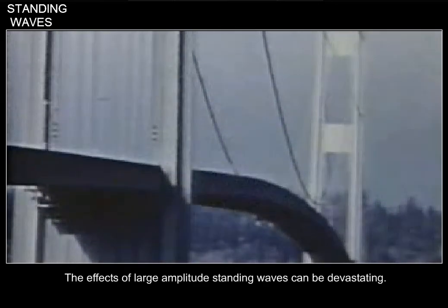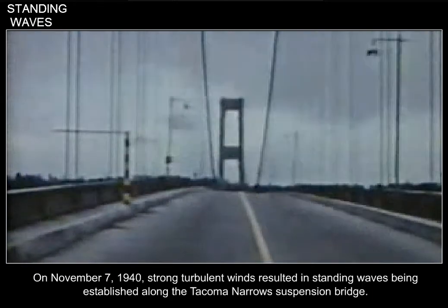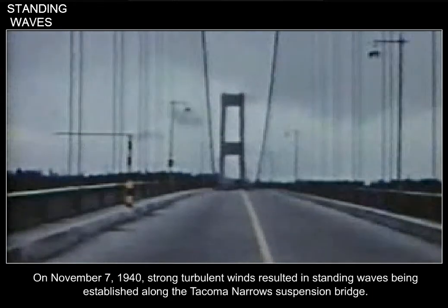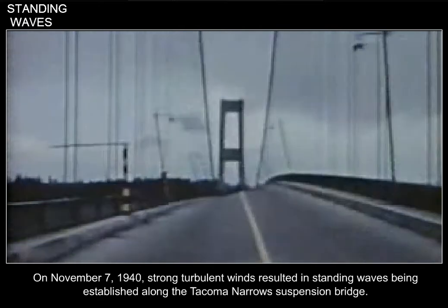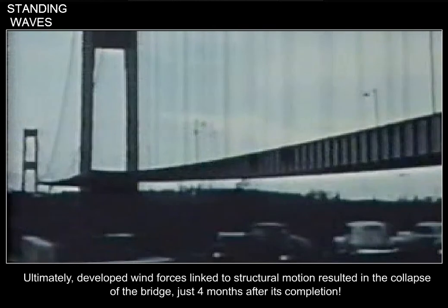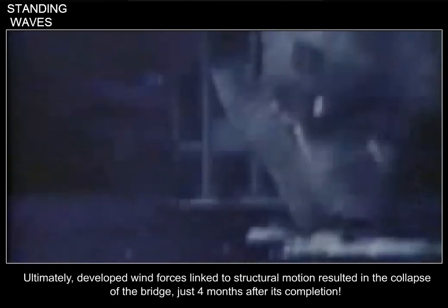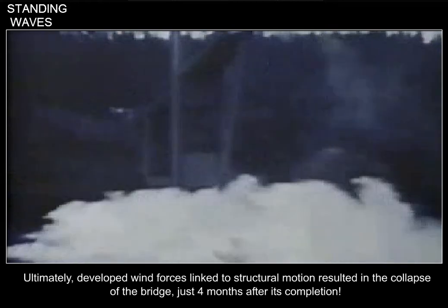The effects of large amplitude standing waves can be devastating. On November 7, 1940, strong turbulent winds resulted in standing waves being established along the Tacoma Narrows Suspension Bridge. Ultimately, developed wind forces linked to structural motion resulted in the collapse of the bridge.